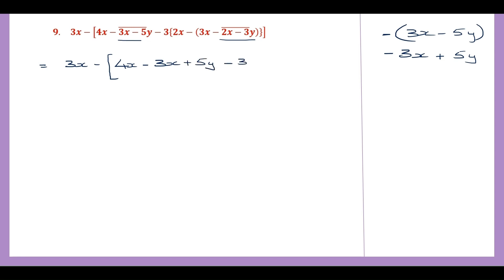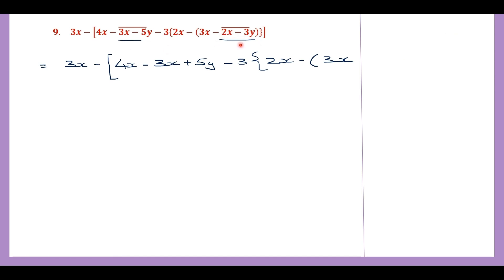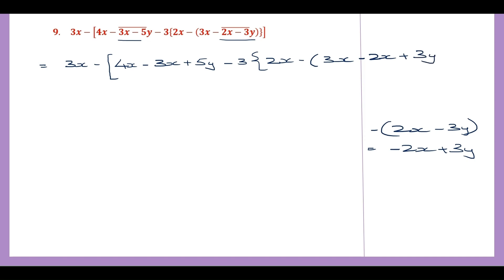Then we continue minus 3, then we have curly brackets, 2x minus — we have the parenthesis — 3x. Now we have to again work out what is underneath the bar bracket before we remove it. So what do we have under this? We have 2x minus 3y. Writing that: 2x minus 3y, and we have a minus sign before that. That means the sign of all these will change to minus 2x plus 3y. So writing that here: minus 2x plus 3y. Now close all the brackets. So the bar bracket has been removed.